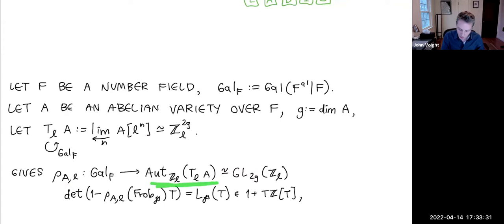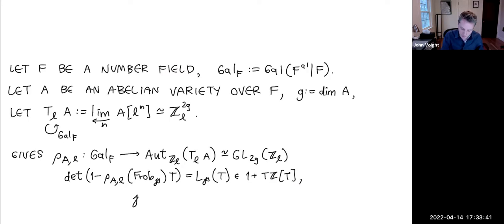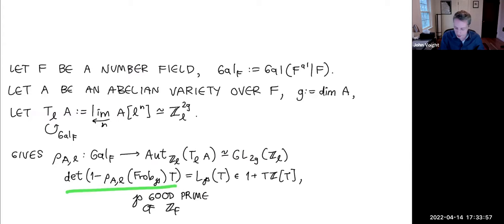The notation for this representation is ρ_{A,ℓ}, and it maps into the Z_ℓ-linear automorphisms of this Tate module, which is GL_{2g}(Z_ℓ). Its defining property is that if you take a good prime p of the ring of integers of F, you can apply the conjugacy class of Frobenius; the reciprocal characteristic polynomial gives you the numerator of the zeta function for the abelian variety, a polynomial with integer coefficients starting 1 + t.